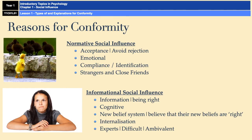Informational social influence, on the other hand, is all about who has the better information. If somebody conforms due to informational social influence, it's because they believe somebody else has better information than they have, and so they conform because they want to be correct and do the right thing. It's more of a cognitive, thought-based reason for conforming. It leads to internalisation, because if you're conforming in order to be right, you'll change your belief system and internalise the new behaviours as correct.